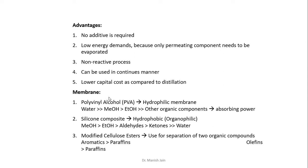The different types of membranes used in this process can be classified into three types. First are hydrophilic membranes — membranes with higher affinity towards water, like polyvinyl alcohol (PVA) membranes. These types of membranes can be used to separate water from water-organic compound mixtures like water-alcohol mixtures, where water selectively permeates through the membrane and then vaporizes on the other side.